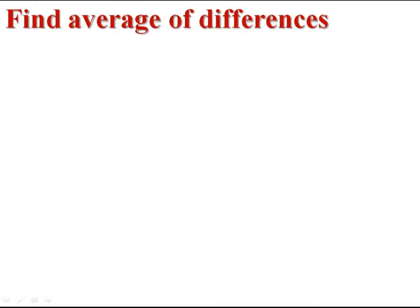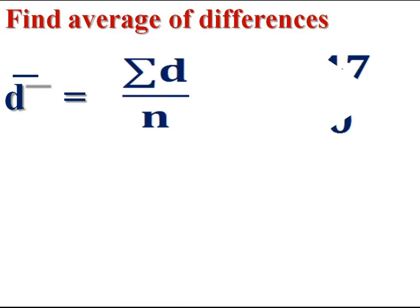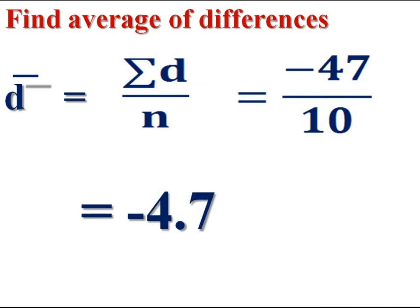First step, find average of differences. D bar is equal to sigma D by N. N means number of pairs. Sigma D, -47, divided by number of pairs is 10. That is equal to -4.7. It is the average of differences.